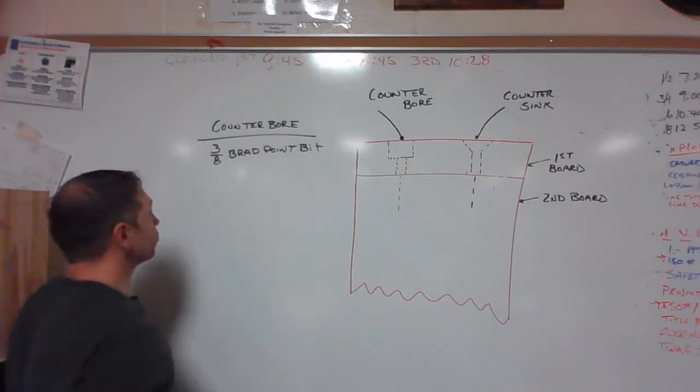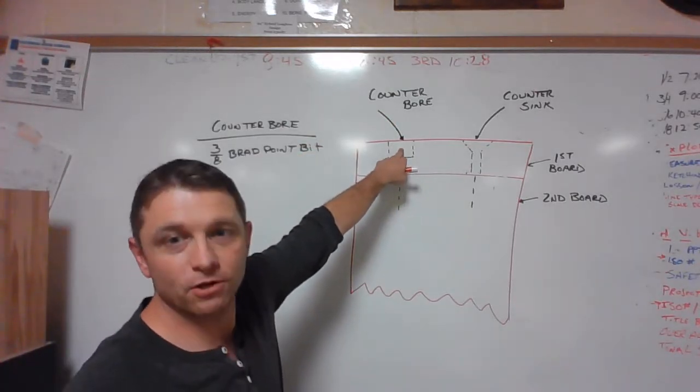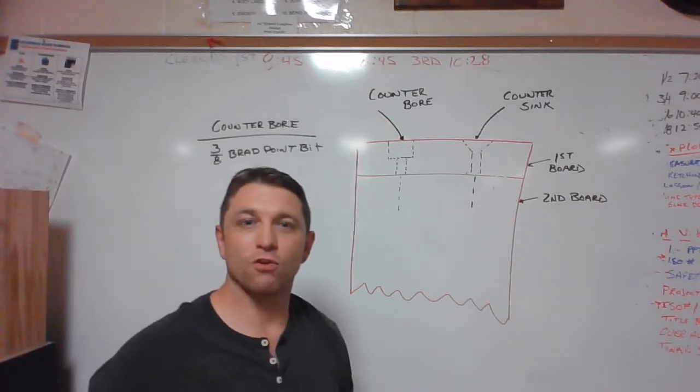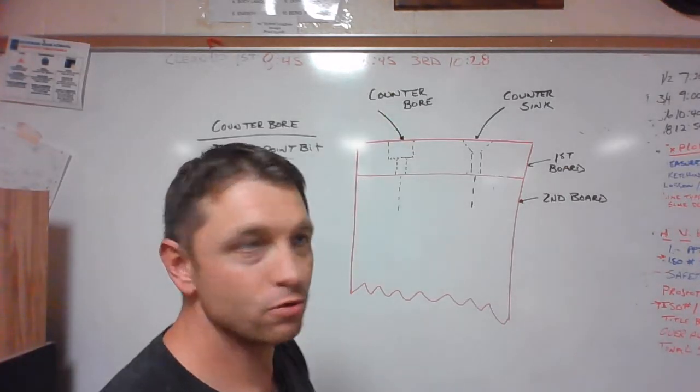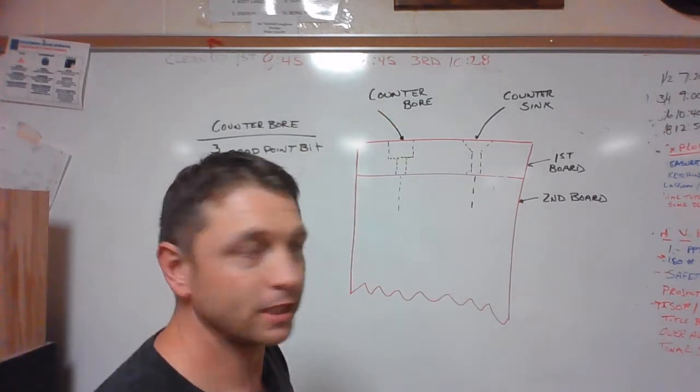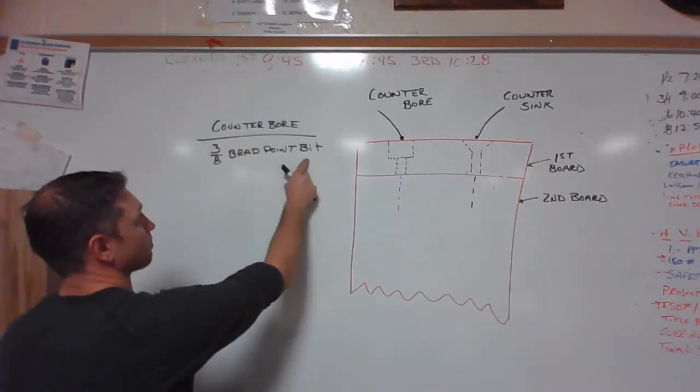This is the only hole that we know the actual diameter to, and that is because we're going to fill it with a plug, so we need to know the correct plug cutter to use to fill that counter bore hole when once we're completed. So that's a three-eighth brad point bit.